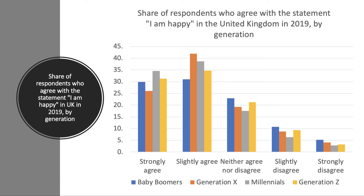Millennials are typically people born in the period from about the early 1980s to the mid-1990s — so if you were born in 1985, you would be 35 years old now. And Generation Z, typically people born between the mid-1990s to the mid-2000s.